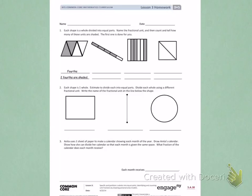This is Module 5, Lesson 3, Homework. Today's objective was to specify and partition a whole into equal parts, identifying and counting unit fractions by drawing pictorial area models.